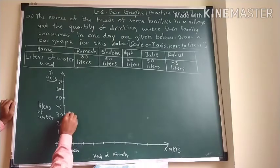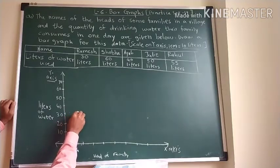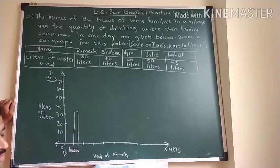So I am writing Ramesh. For Ramesh, 30 is there. So this way we take to 30 and half centimeter bar we have to draw. Now from this we have to give one centimeter distance.